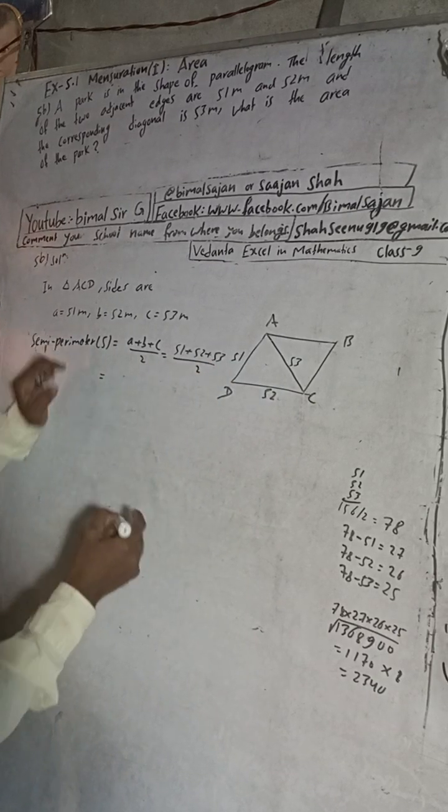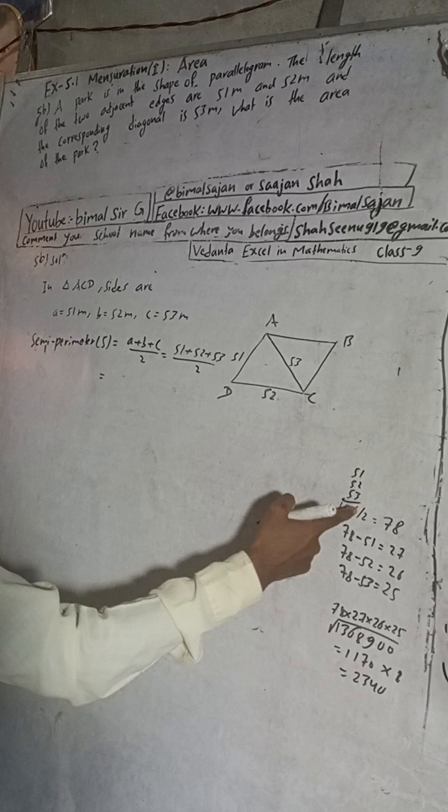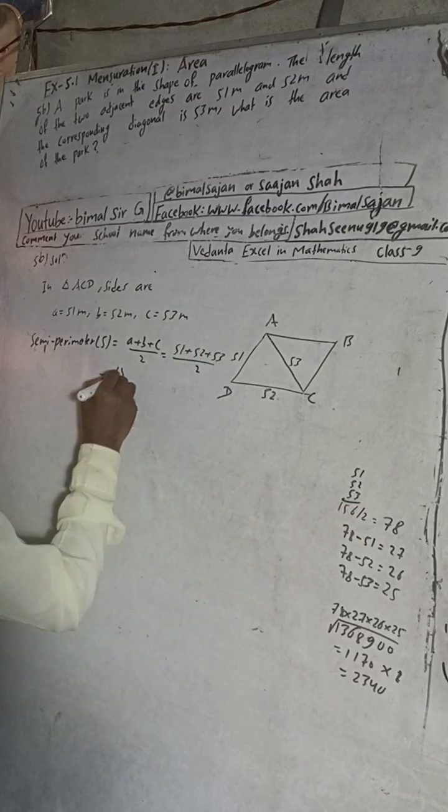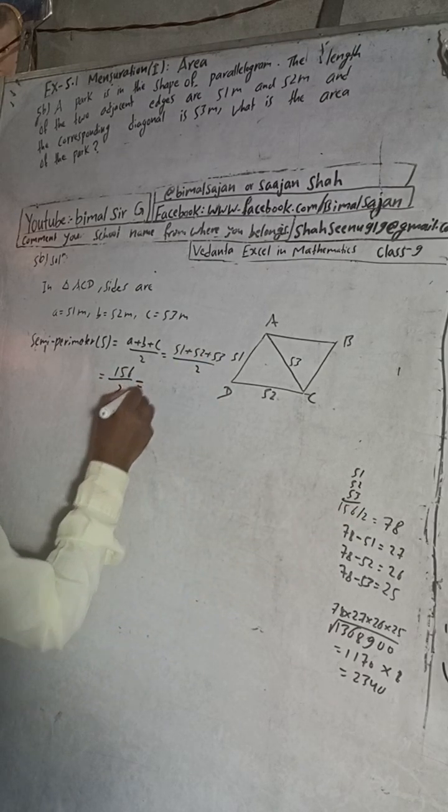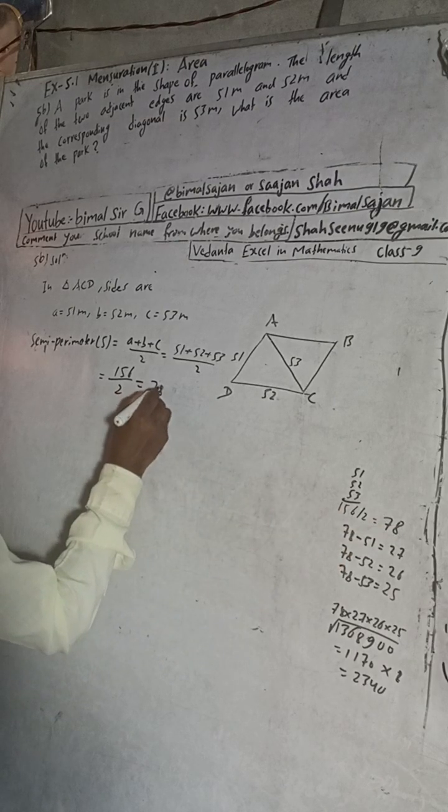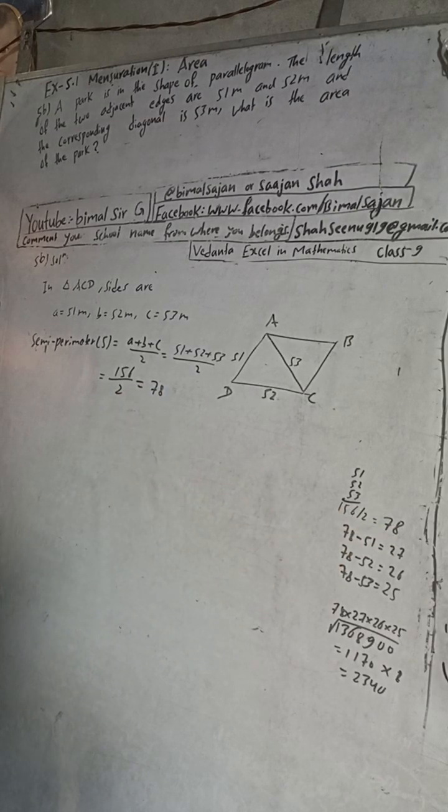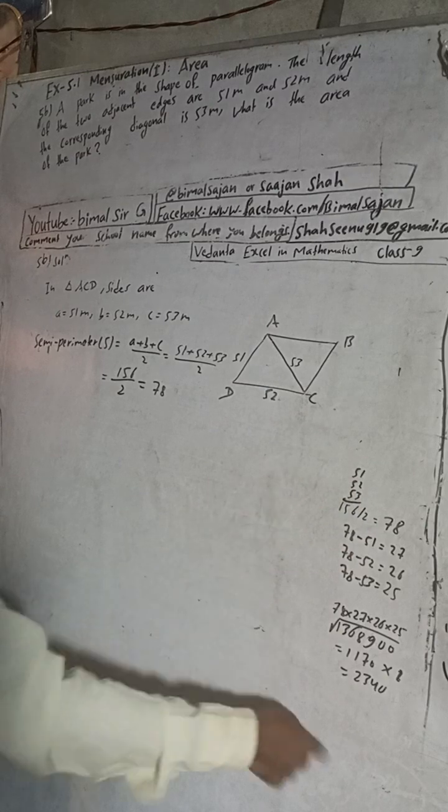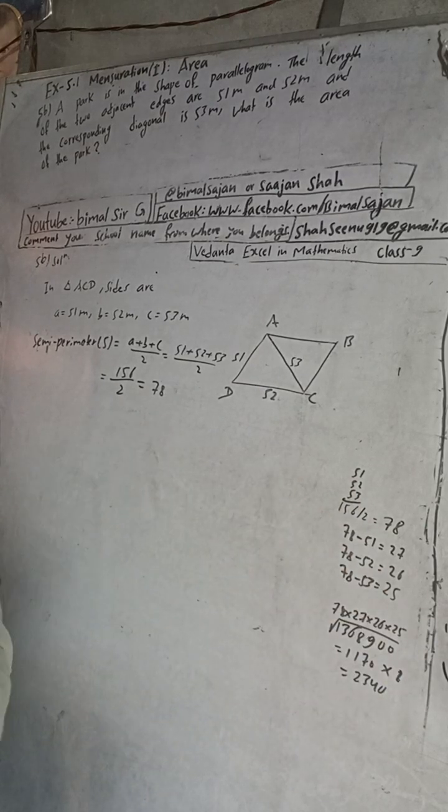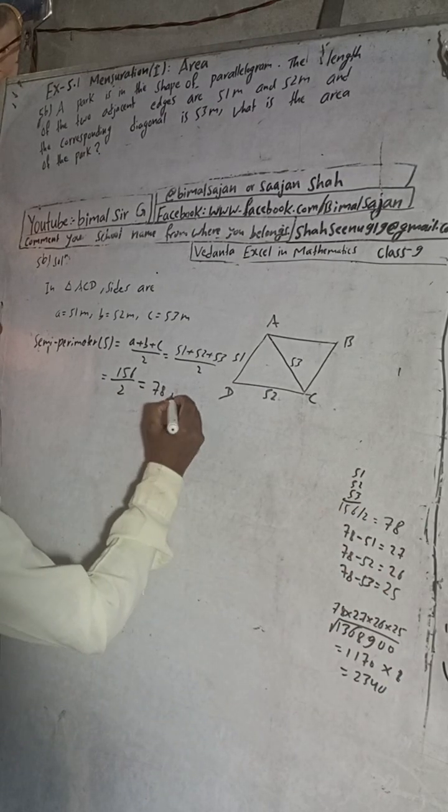So here is 51 plus 52 plus 53 divided by 2. When we add this all, we will get 156. Here 156 divided by 2, and this will be 78. I have already calculated these things, now here 78 meter, this is our semi-perimeter.